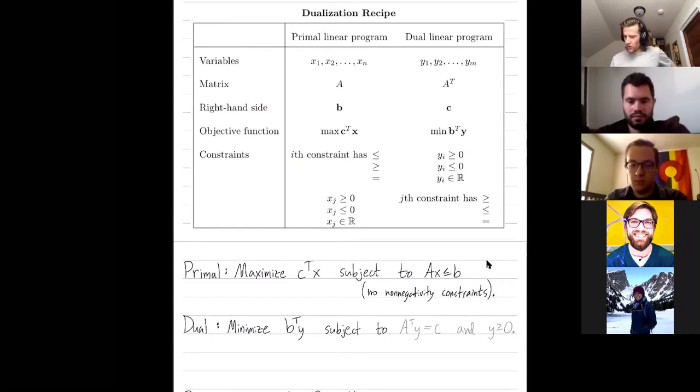All right, so let's go through my recipe. The maximize c transpose x becomes a minimum b transpose y. And then my a becomes an a transpose. My right hand side becomes a c.